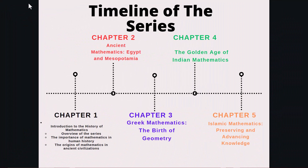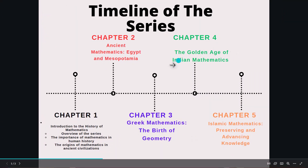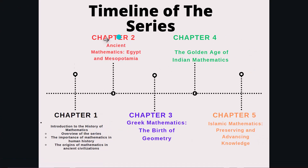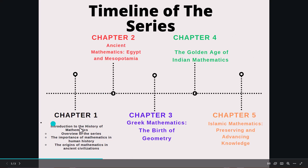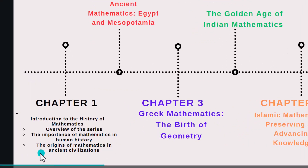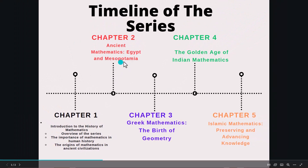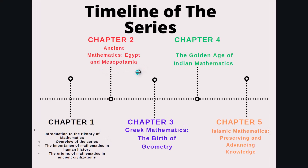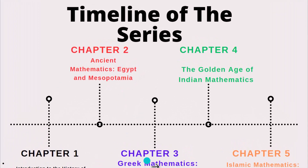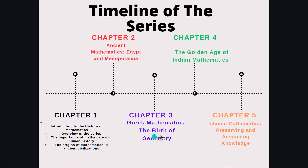This is the timeline of the series. We are going to divide it in chapters or videos or podcasts. The first video is the introduction to the podcast, the history of mathematics. We are going to have the importance of mathematics in human history, and we are going to talk about the origin of mathematics in ancient civilization. Chapter 2 will be devoted to Egypt and Mesopotamia. Chapter 3 will be devoted to Greek mathematics, the birth of geometry.